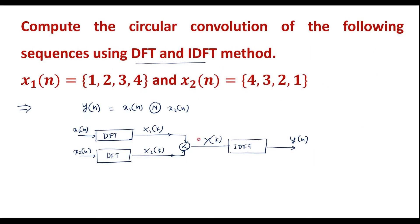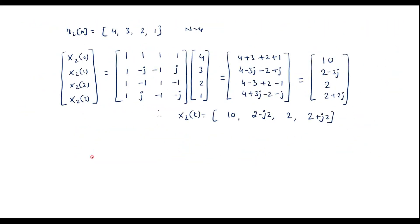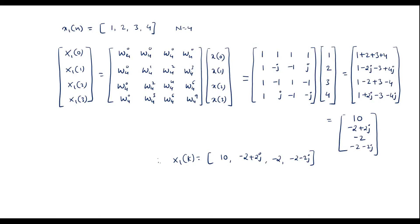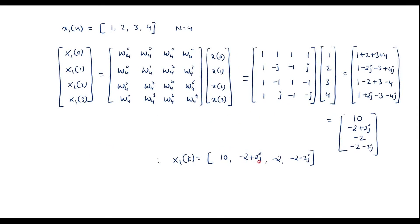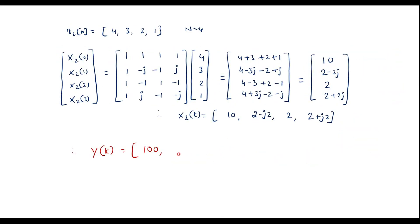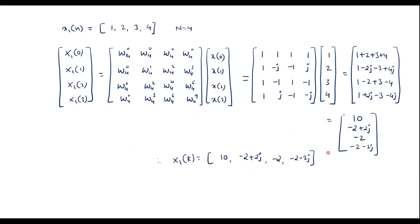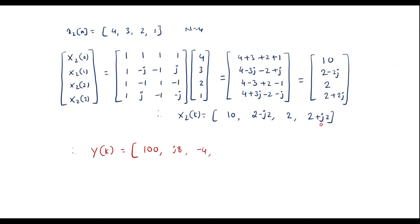Now we compute Y(k) by multiplying X1(k) and X2(k) element by element. X1(0)·X2(0) = 10×10 = 100. X1(1)·X2(1) = (-2+2j)(2+j2) = j8. X1(2)·X2(2) = (-2)(2) = -4. X1(3)·X2(3) = (-2-2j)(2+j2) = -j8. So Y(k) = [100, j8, -4, -j8].